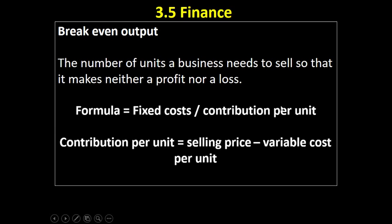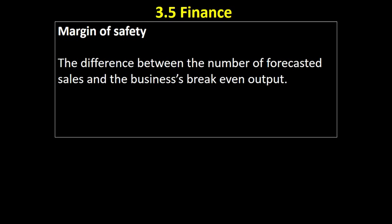Margin of safety is the difference between the number of forecasted sales and a business's break-even output. In other words, let's say a business thinks they're going to sell a certain number of units.